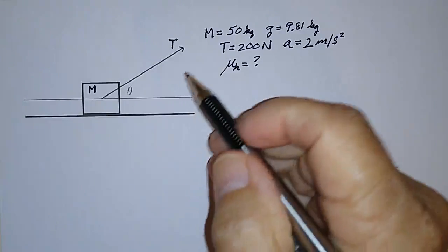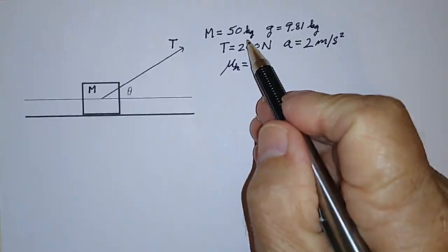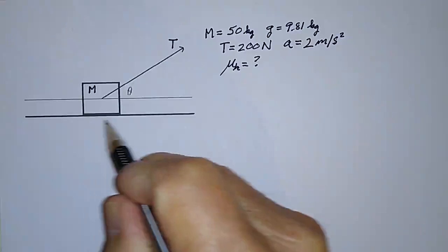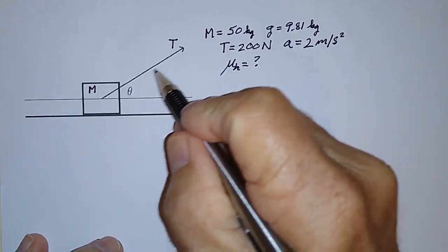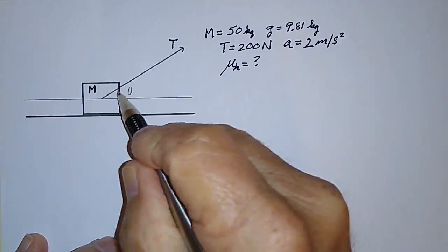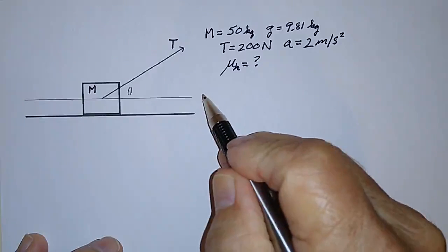Suppose we have a mass M of 50 kilograms sitting on a plane that does have friction and we're pulling on it with a tension T at an angle of theta with respect to the horizontal.